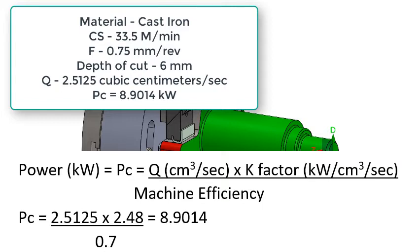Multiply 2.5125 times the K factor 2.48 and divide by 0.7 to get a total power of 8.9014 kilowatts required for the cut.